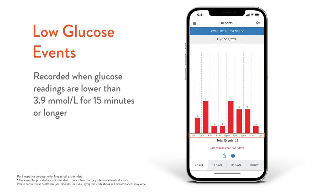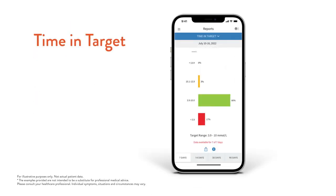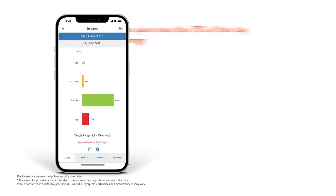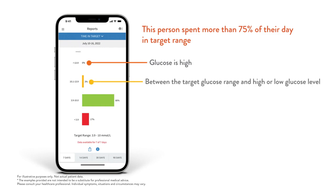Next, let's have a look at the time in target report. Time in target shows the percentage of time your glucose readings were below, above, or within your target glucose range. Here's an example of someone who spent 75% of their day in their target range. Orange shows you when your glucose is high, yellow is when you're above or below target range, green is when you are in range, and red represents low glucose.